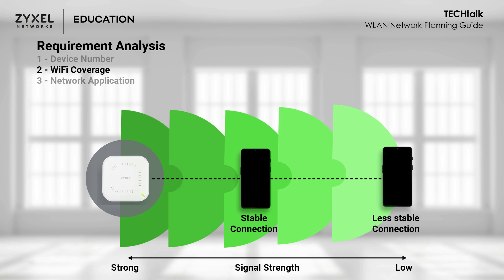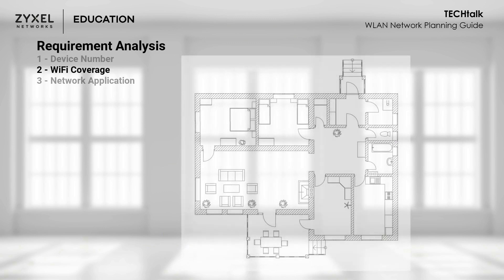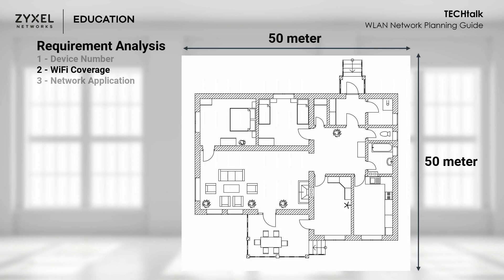In an indoor environment, Zeisel recommends that each AP can provide stable performance within a radius of 15 meters. Of course, there will still be signal received beyond that range, but it may be more susceptible to interference from obstacles like walls, which can make performance less stable. For example, a venue of 50 square meters may require three to four APs to provide adequate coverage.